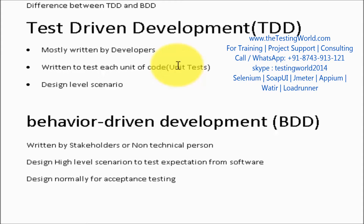But in the case of BDD, we are writing high-level scenarios — we are writing our expectations from the application. Here we are not covering each and every function; we are covering the application as a whole. We are writing scenarios which expect something from the application, not from a specific method or class.